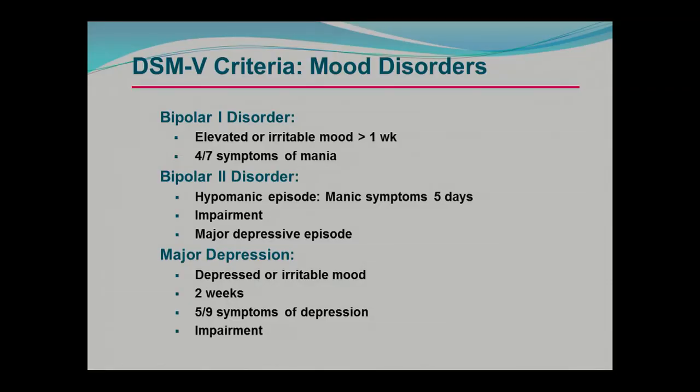I wanted to show you the DSM-5 criteria — the new criteria initially released about a year ago today. It turns out they are central to our studies of treatment and etiology, particularly genetics. This has been a major challenge in our field: we have diseases without biological laboratory markers, and they depend on clinical phenomenology and whether people actually meet criteria for these conditions.